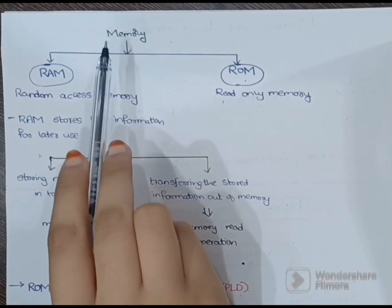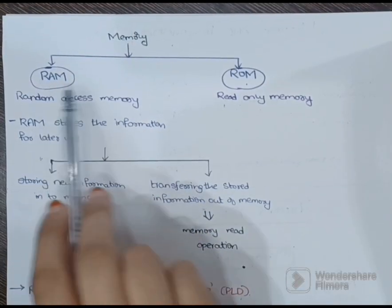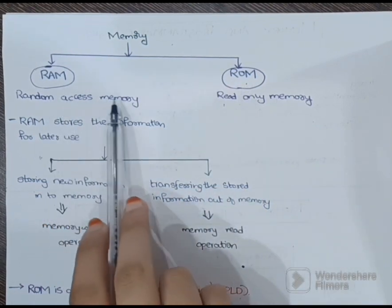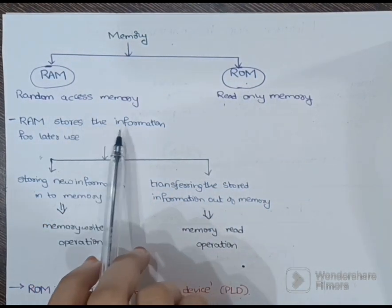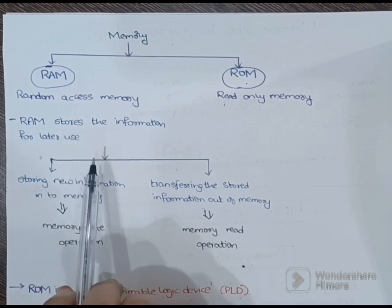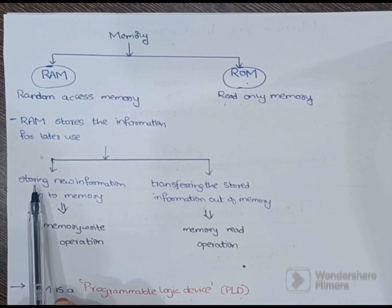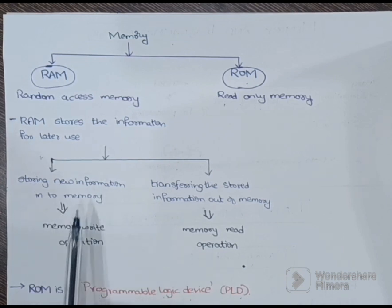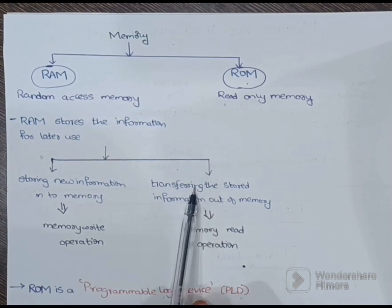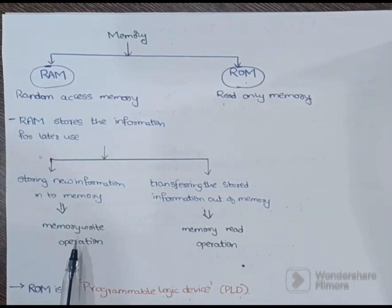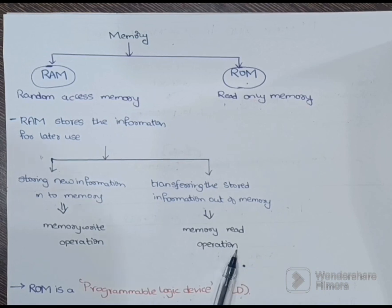Memory is mainly classified into two types. RAM is Random Access Memory. The process of storing new information into the memory is known as a memory write operation, and the process of transferring the stored information out of the memory is known as a memory read operation. RAM can perform both write and read operations.